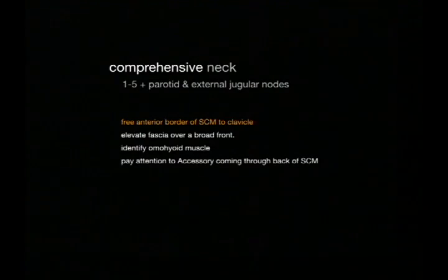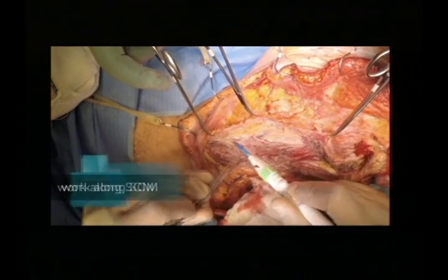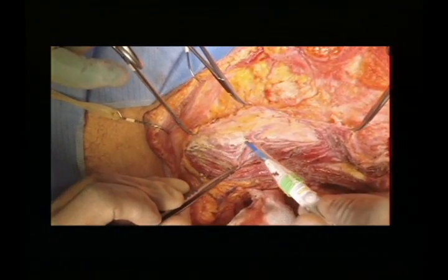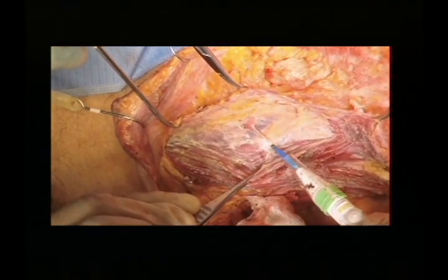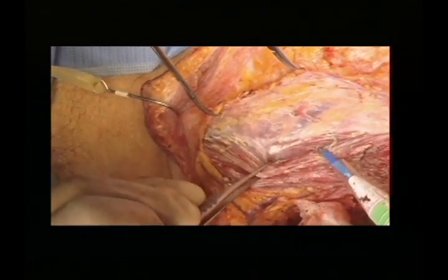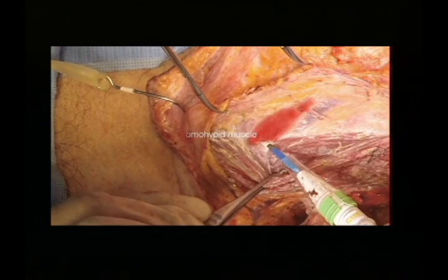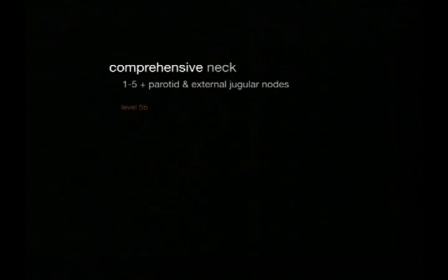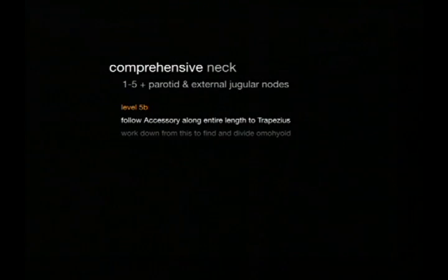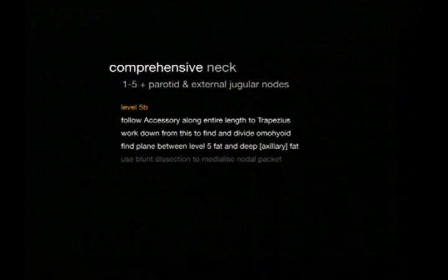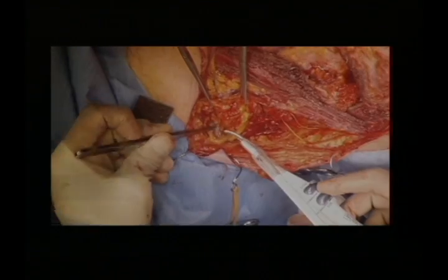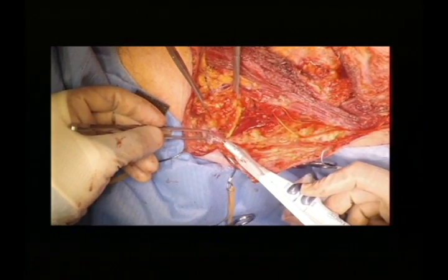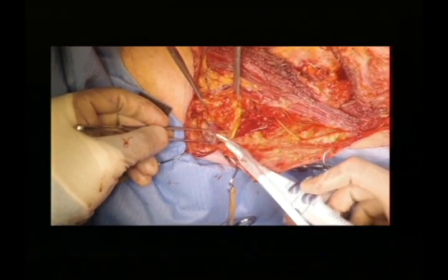Once the spinal accessory nerve has been isolated at the top end, we head to the bottom end and free the fascia off the front of the sternocleidomastoid muscle using monopolar diathermy, working on a broad front. Be careful here because you can rotate the sternocleidomastoid out too much and injure the spinal accessory nerve lower down. We're looking for the omohyoid muscle — we take that down towards the clavicle and follow it where it comes through the sternocleidomastoid at the back. We've started using the harmonic scalpel to divide the omohyoid and also to manage troublesome lymphatics and vessels in this area.